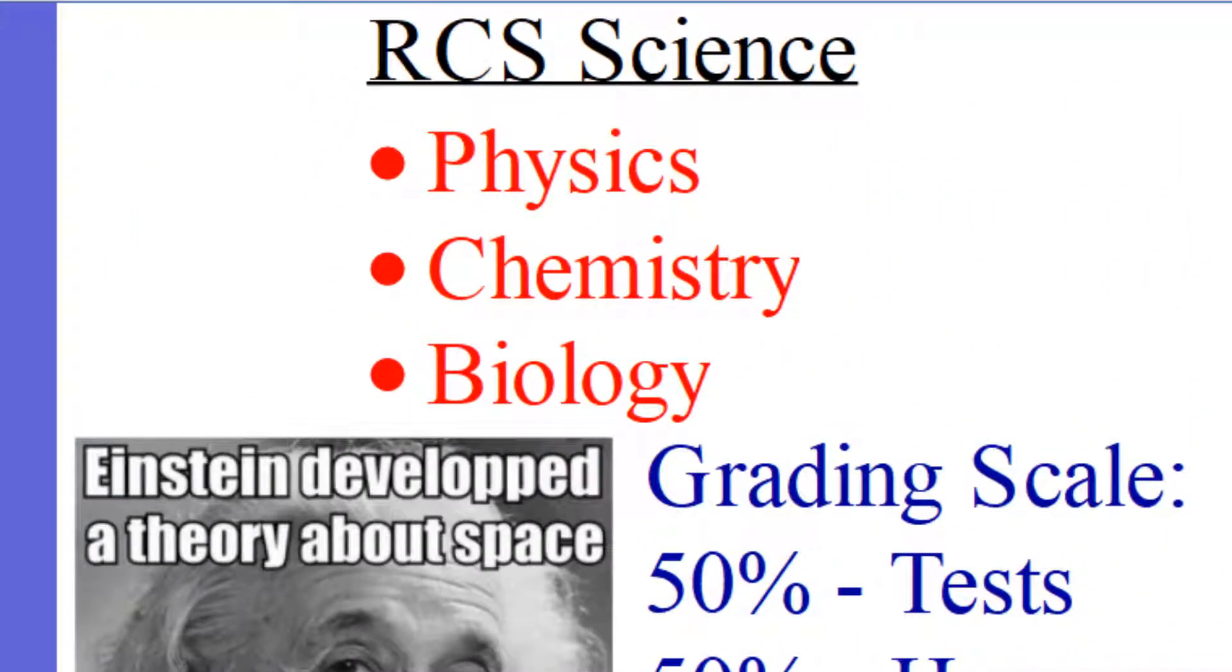So what is this Integrated Science course going to be? We're going to be doing physics, we're going to be doing chemistry, and we're going to be doing biology. And so this will really prepare you for high school at Redeemer Christian High School, which 9th graders take physics, 10th graders take chemistry, 11th graders take biology. This gives you a really good introduction into all of these sciences and really helps you out big time.